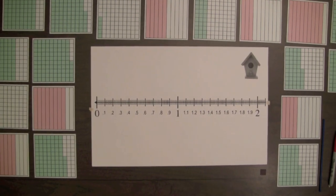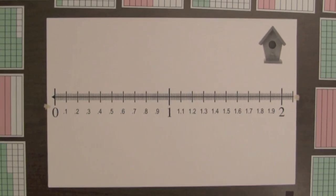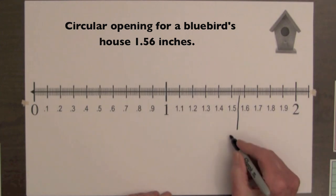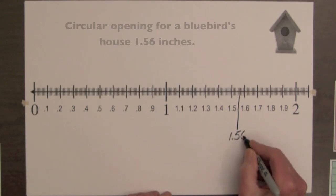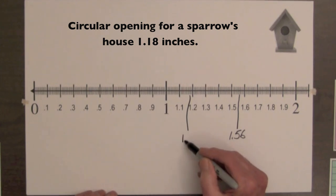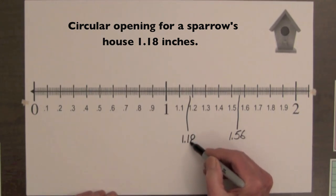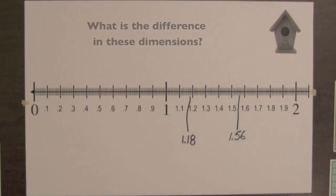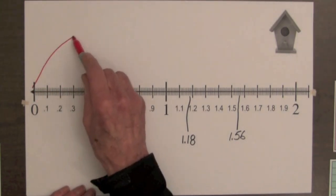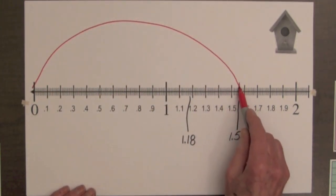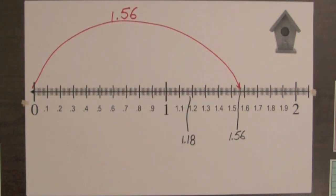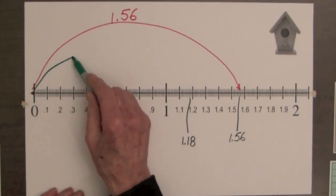The circular opening for a bluebird's house has a diameter of 1 and 56 hundredths inches. The opening for a sparrow's house is 1 and 18 hundredths inches. What is the difference in these dimensions? Let's draw an arc to represent the opening of the bluebird's house and an arc to represent the opening of the sparrow's house.